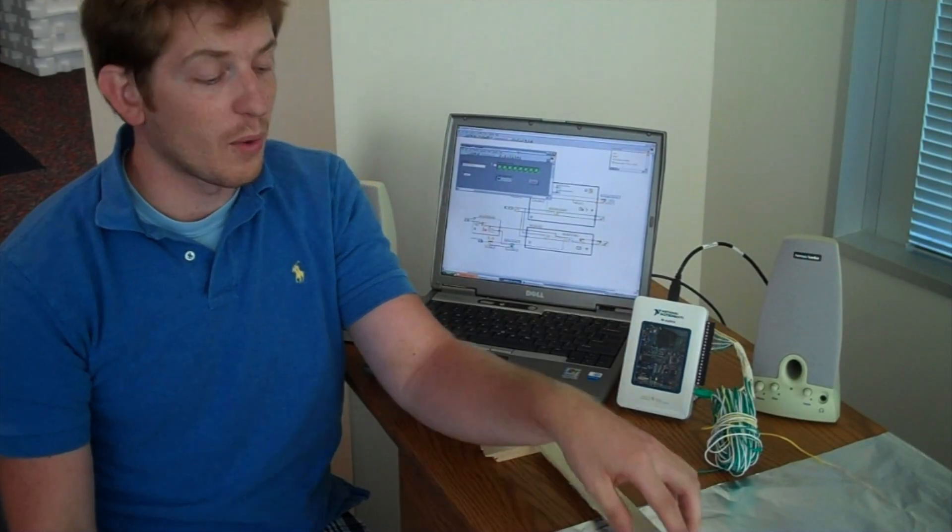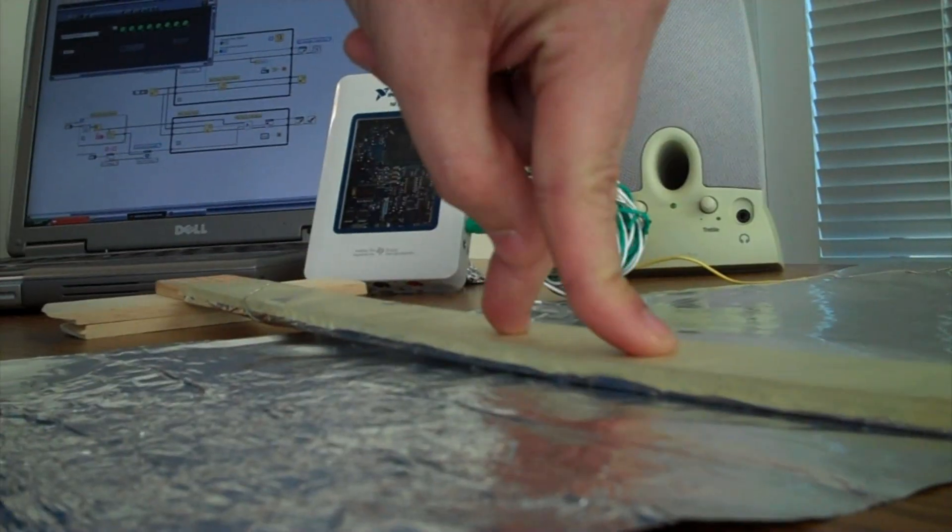We had to build a switch for each step. What we have here is a yardstick with aluminum foil on the bottom, as well as aluminum foil for the bottom of the step, so that when you step on the yardstick, it closes the switch.